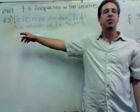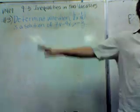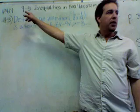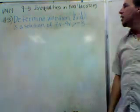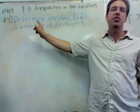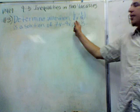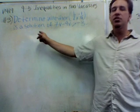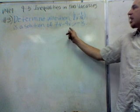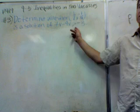We're on page 419 and we're going to do number 3 now. These are inequalities in two variables. It's from chapter 9, section 5, and the question asks you to determine whether 1 half, negative 1 quarter, is a solution of 7y minus 9x is greater than negative 3.